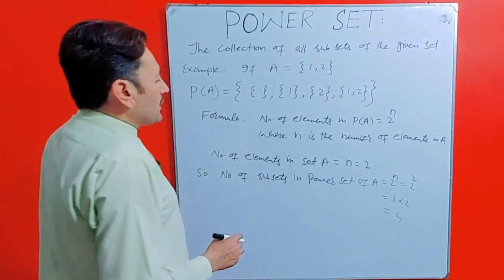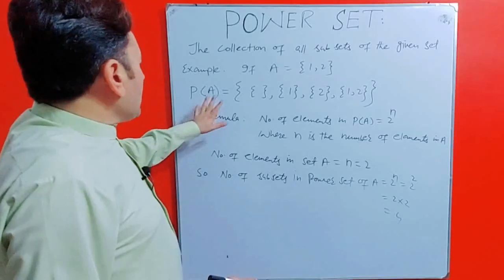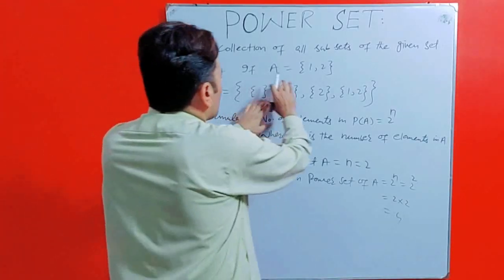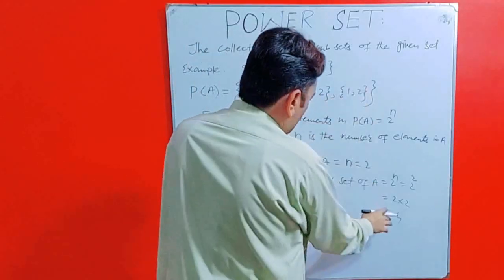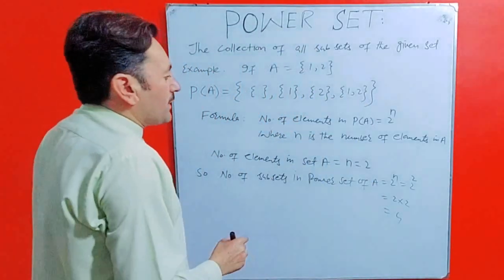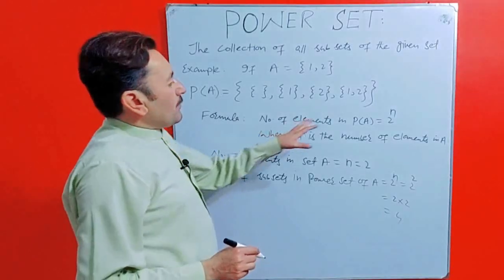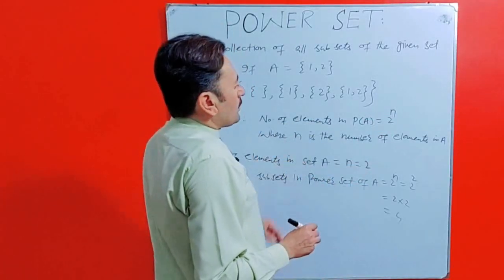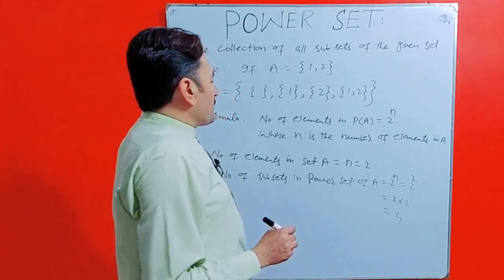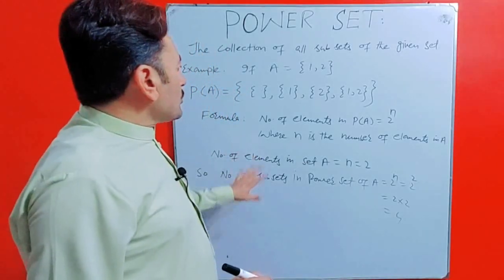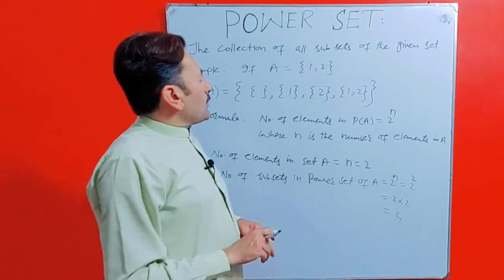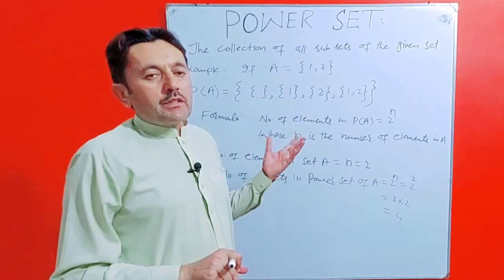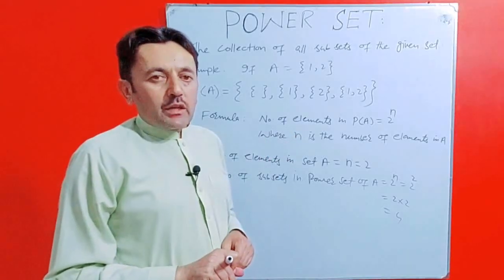So let us check whether number of subsets in power set of A is equal to 2 raised to the power n where n is the number of elements in A. So this formula holds true. I hope that you people understand power set and how we write the elements in a power set. Thanks for watching.